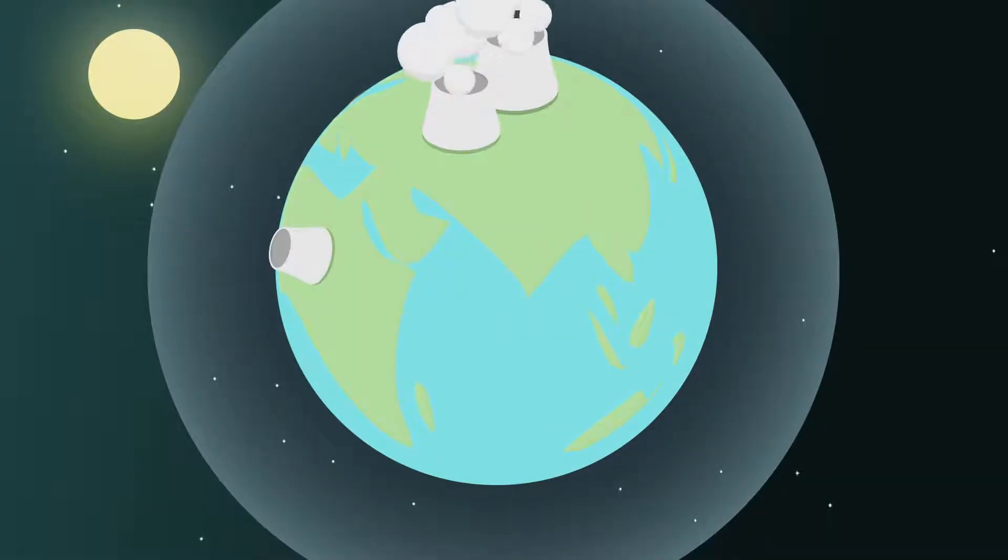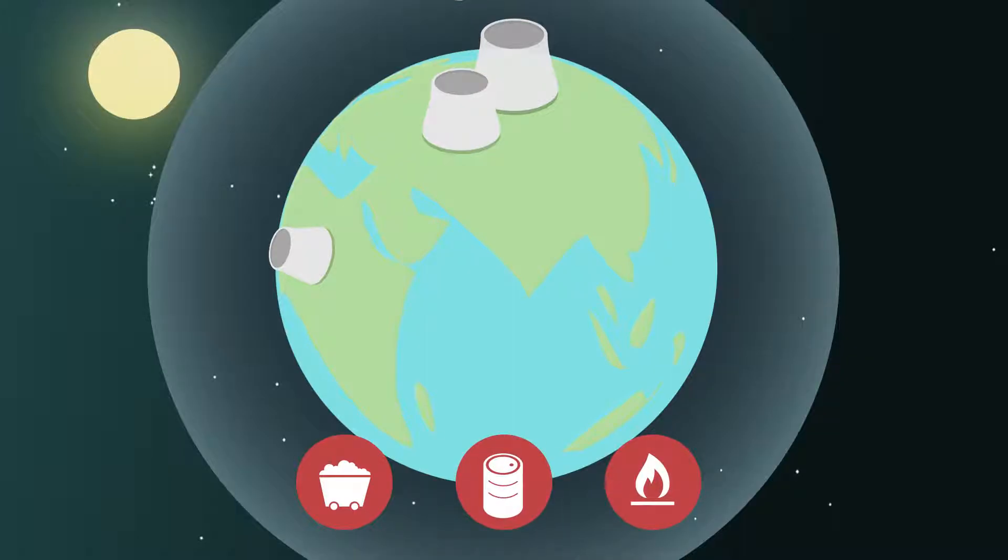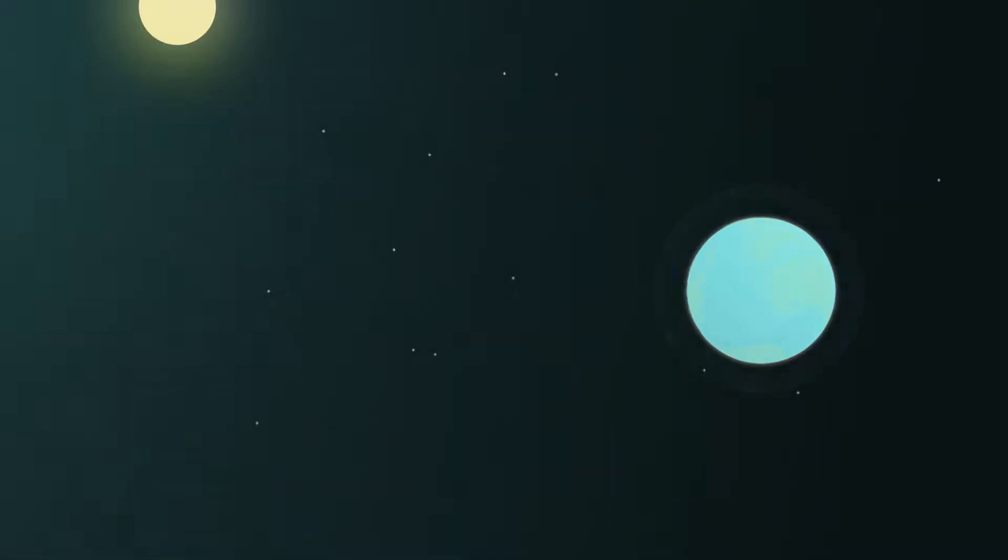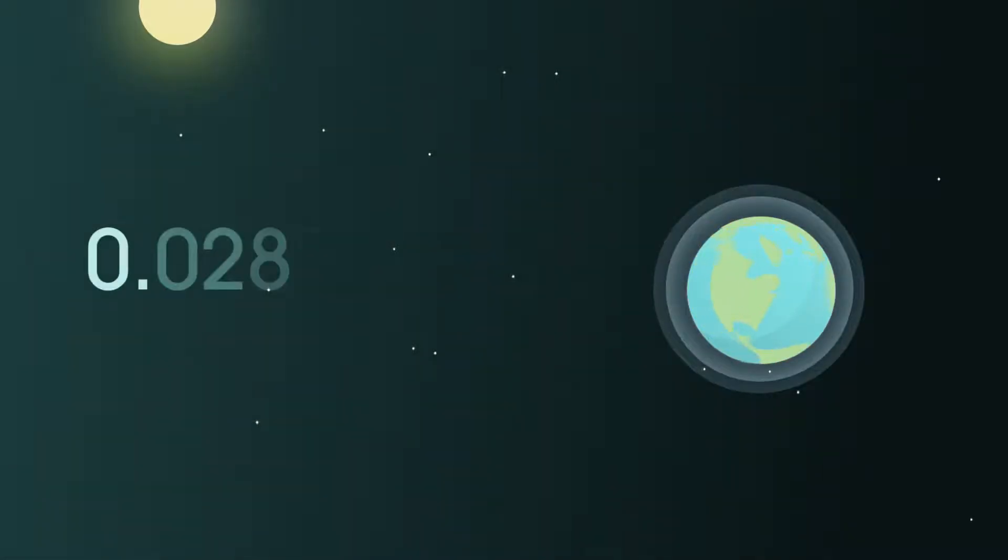Before the world became industrialized by burning fossil fuels such as coal, oil and natural gas the carbon dioxide concentration in the atmosphere was about 0.028 percent.